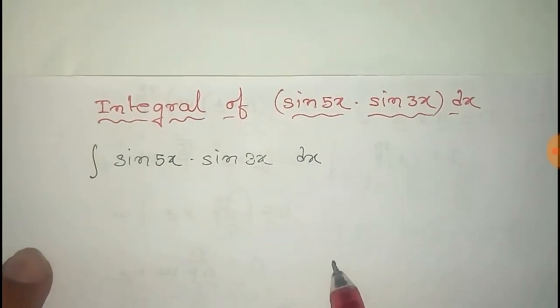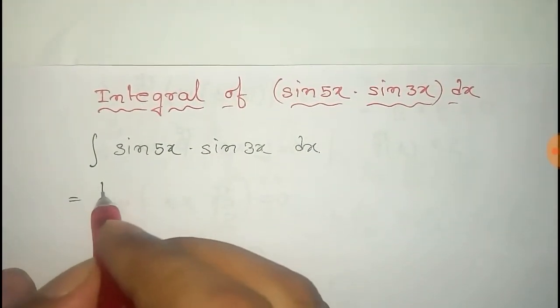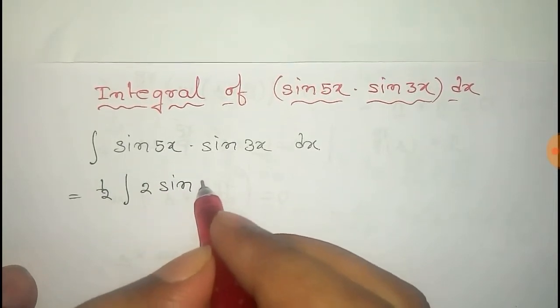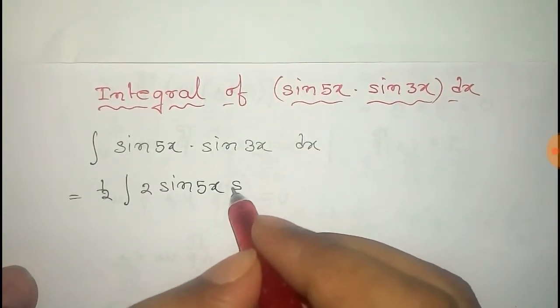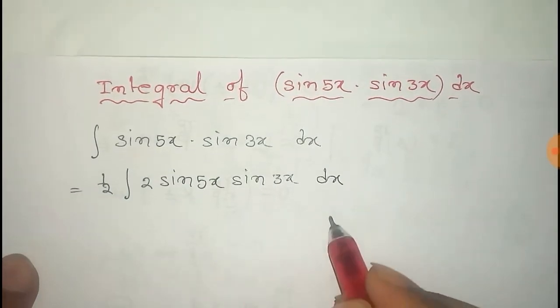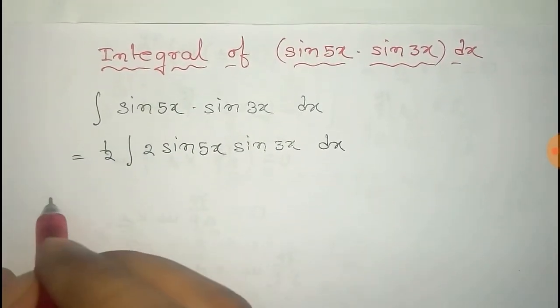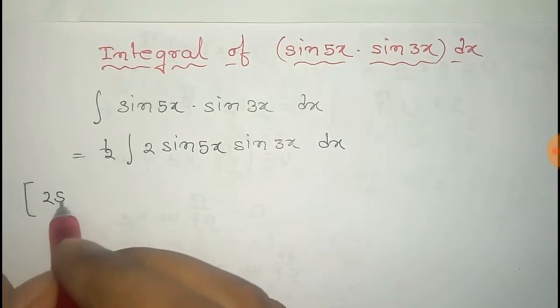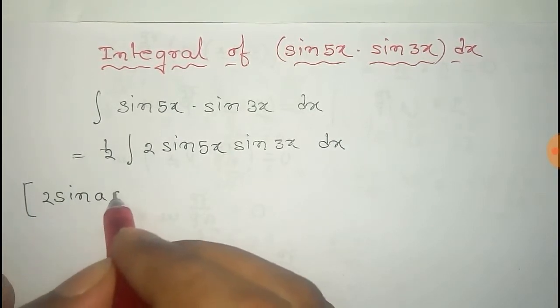Now we can write this as half integral twice sine 5x into sine 3x dx. Now to find the integral here we use the formula of twice sine a into sine b.